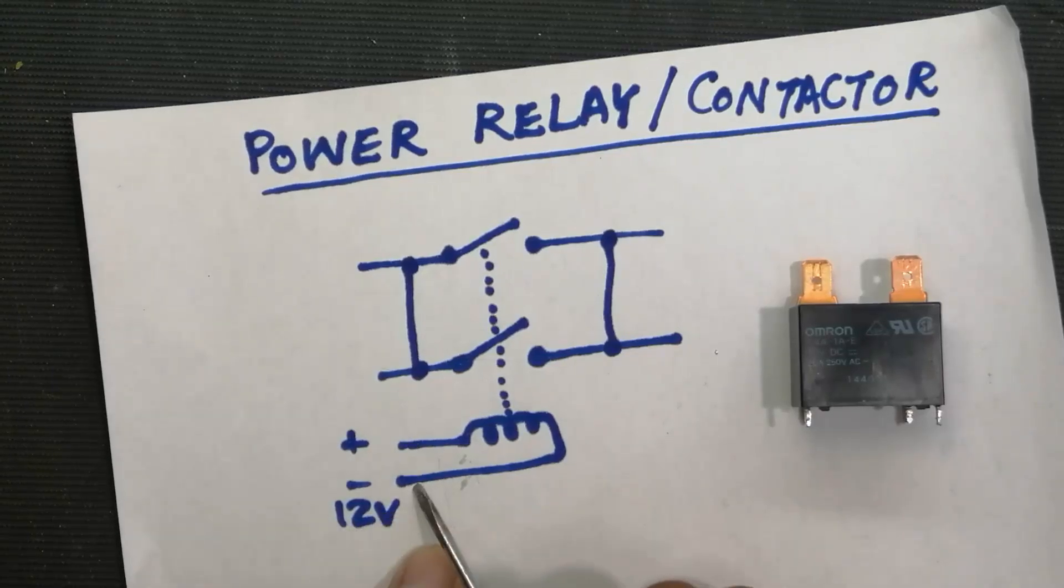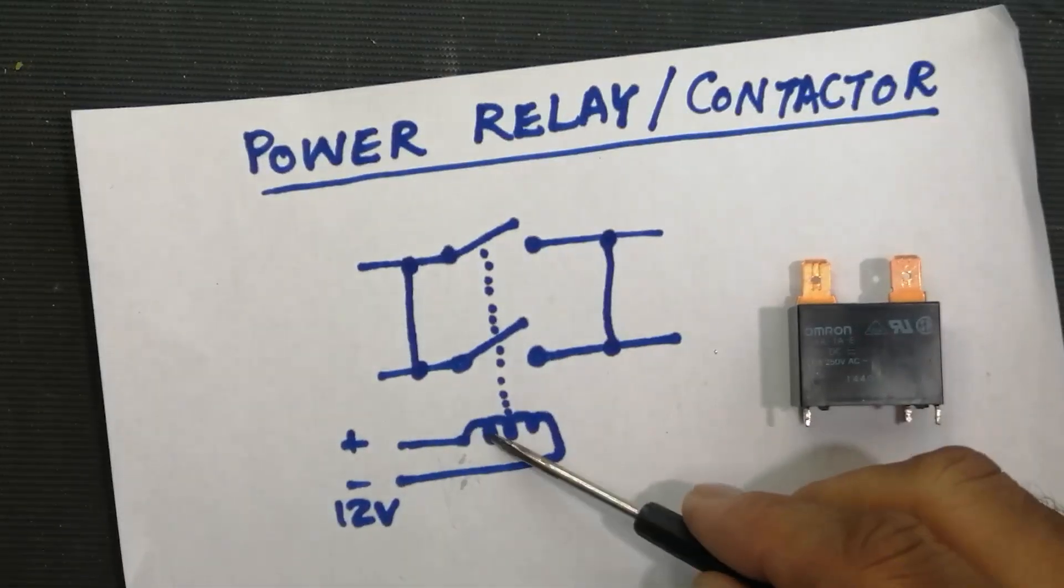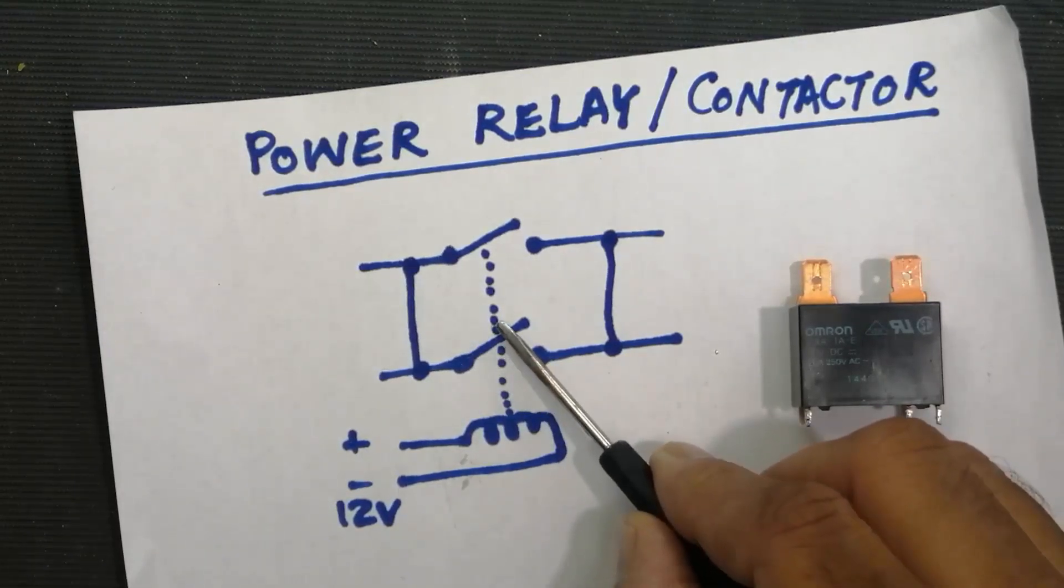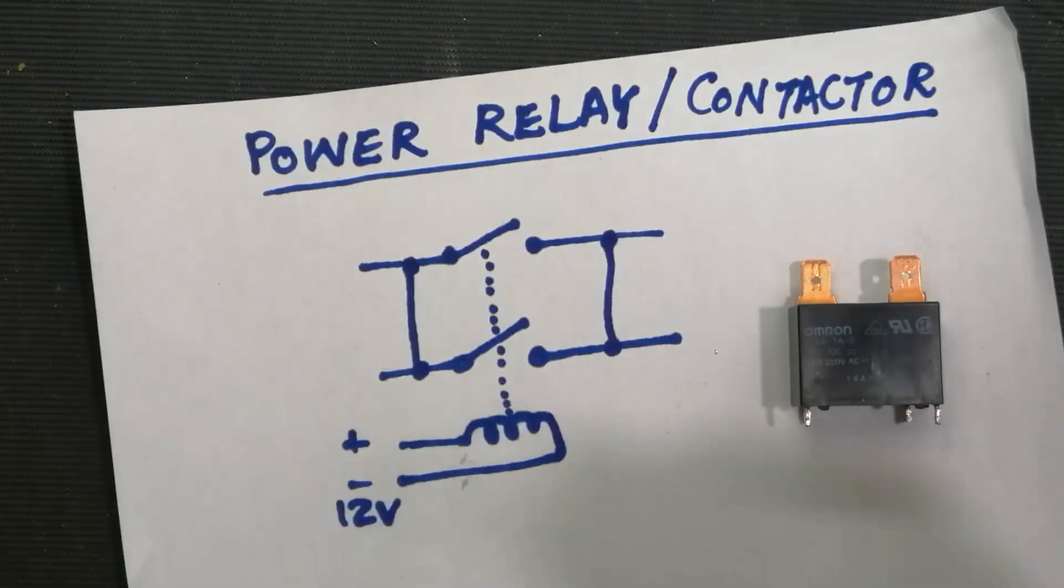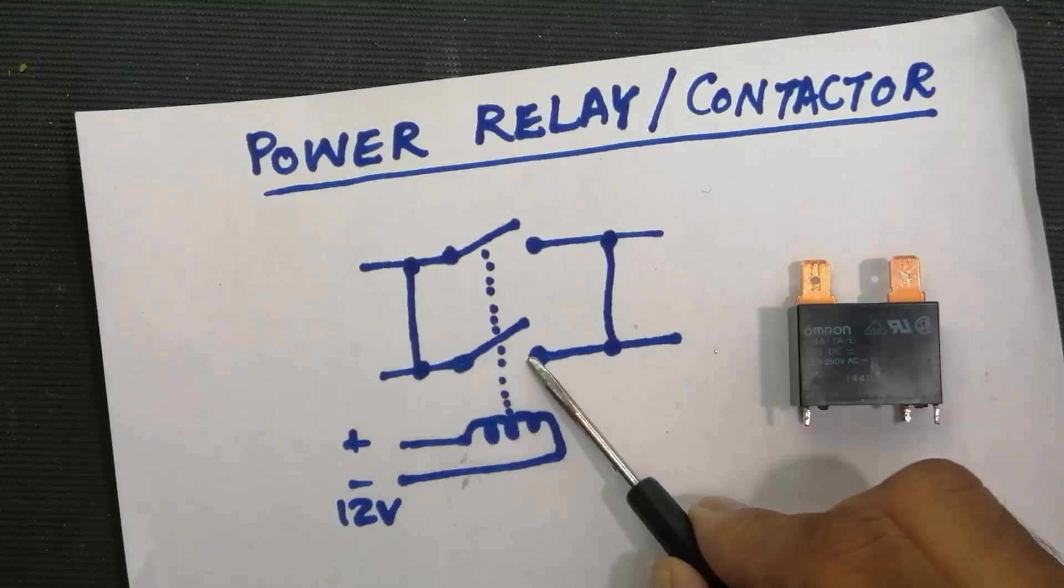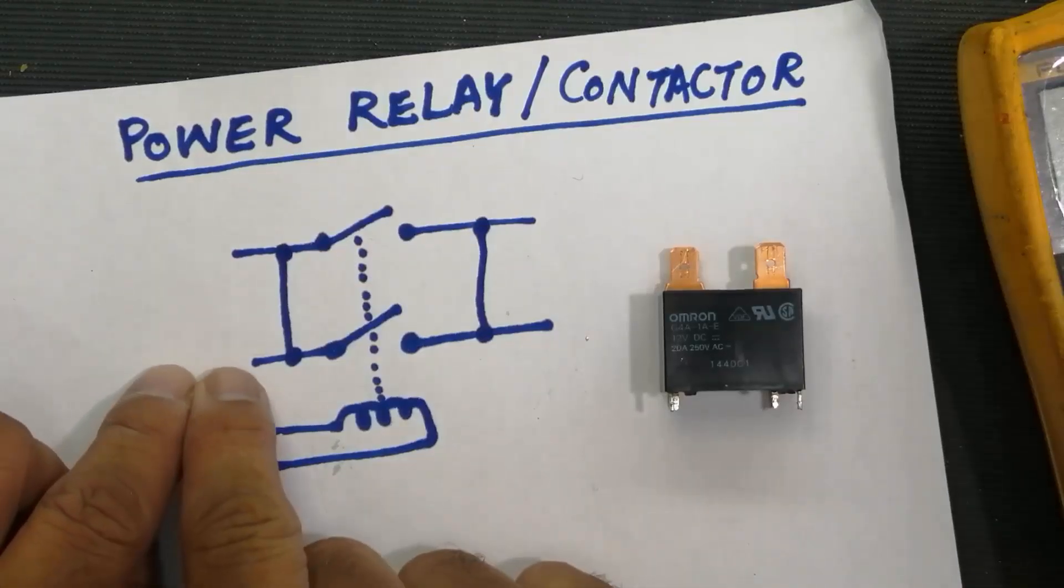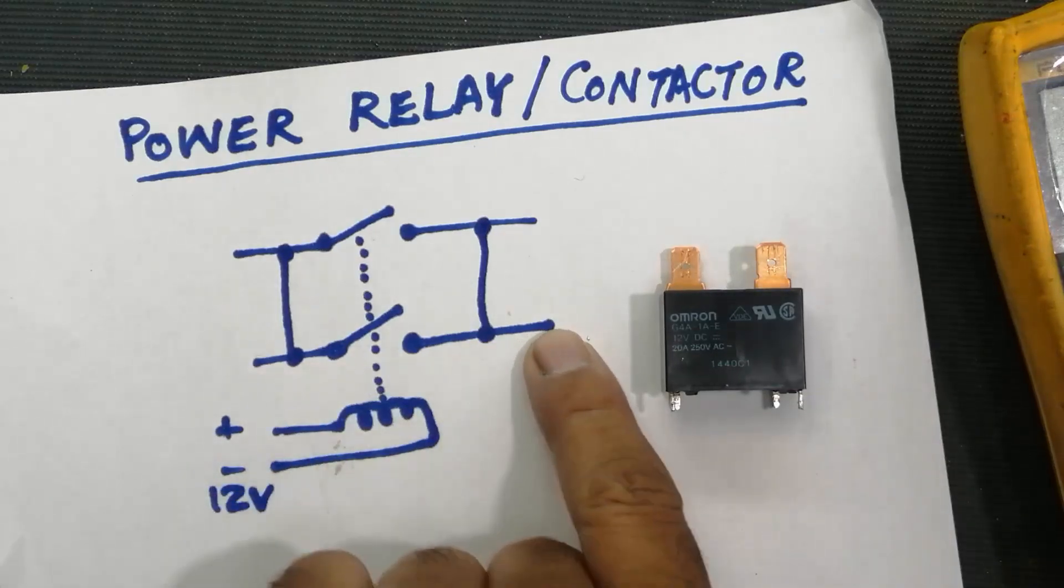We apply 12 volts in the coil and the coil generates a magnetic field. So this magnetic field will pull this contact arm towards the coil. So this point will make, this contacting arm will shift and it will make a connection with this point. And our current present at this point will reach in the output.